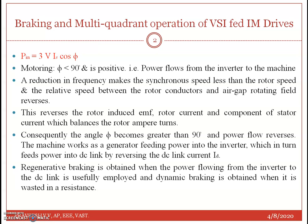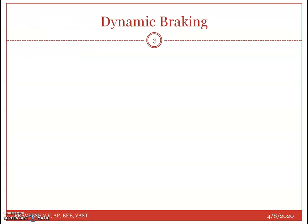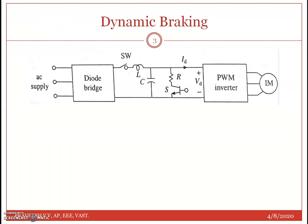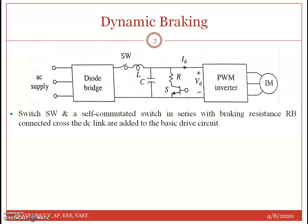This is the circuit diagram or block diagram for the dynamic braking setup. Additional elements are added: a self-commutated switch SW and a braking resistance R (or Rb) connected across the DC link are added to the drive circuit.